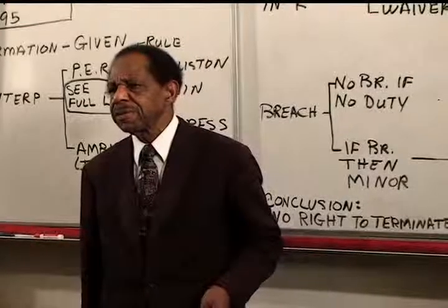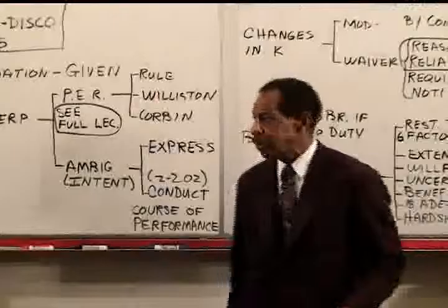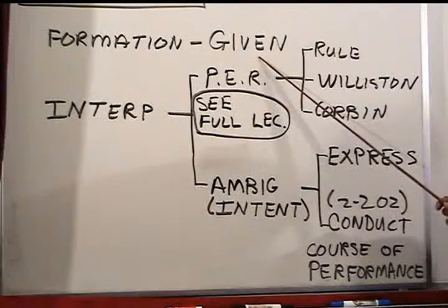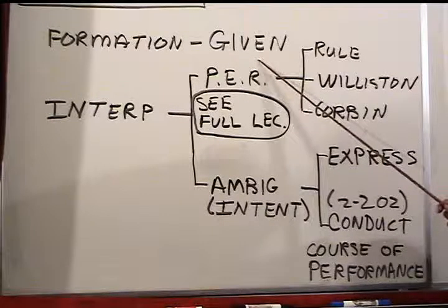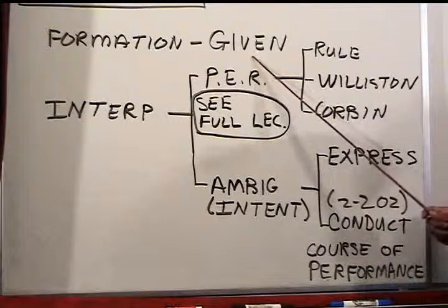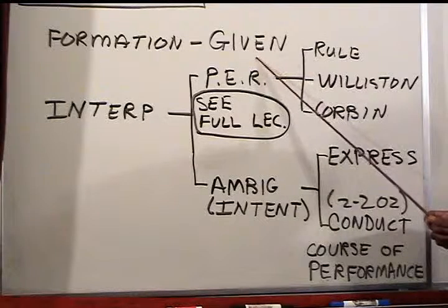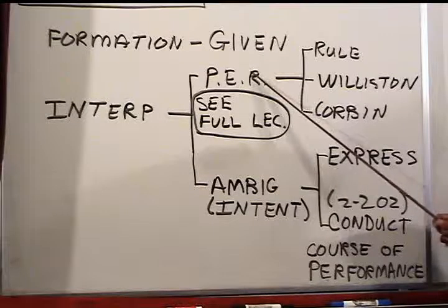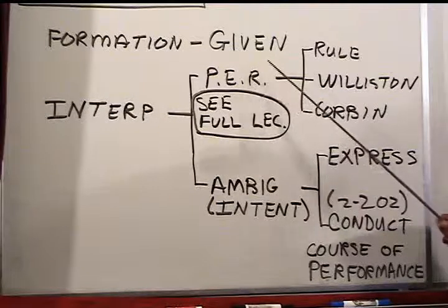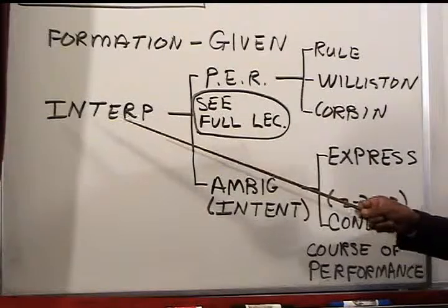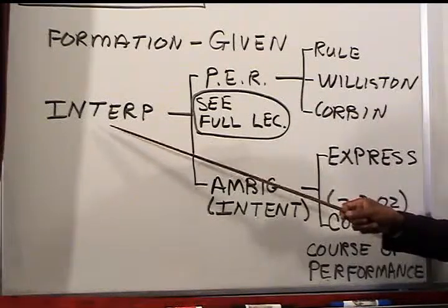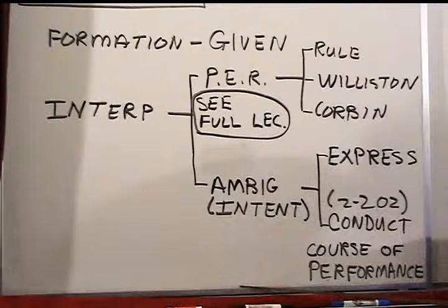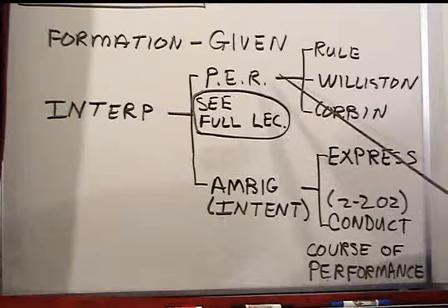Disco's manager threatened to sue if Lab tried to terminate. The question is: can Lab terminate the contract? Formation was given — you don't need to go through offer, acceptance, and so on. You may need to recite the terms: according to the facts, the parties had a contract with the 48-hour provision. Then we address interpretation of terms: parol evidence rule, ambiguity, and mistake. We do not have mistake in this case, but we do have parol evidence rule.